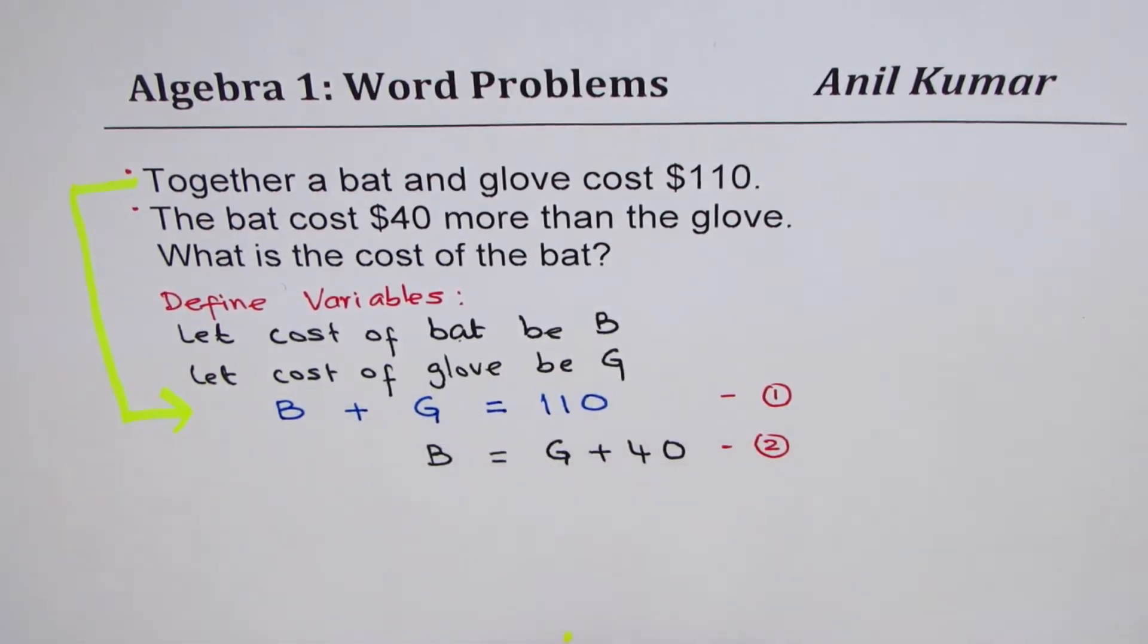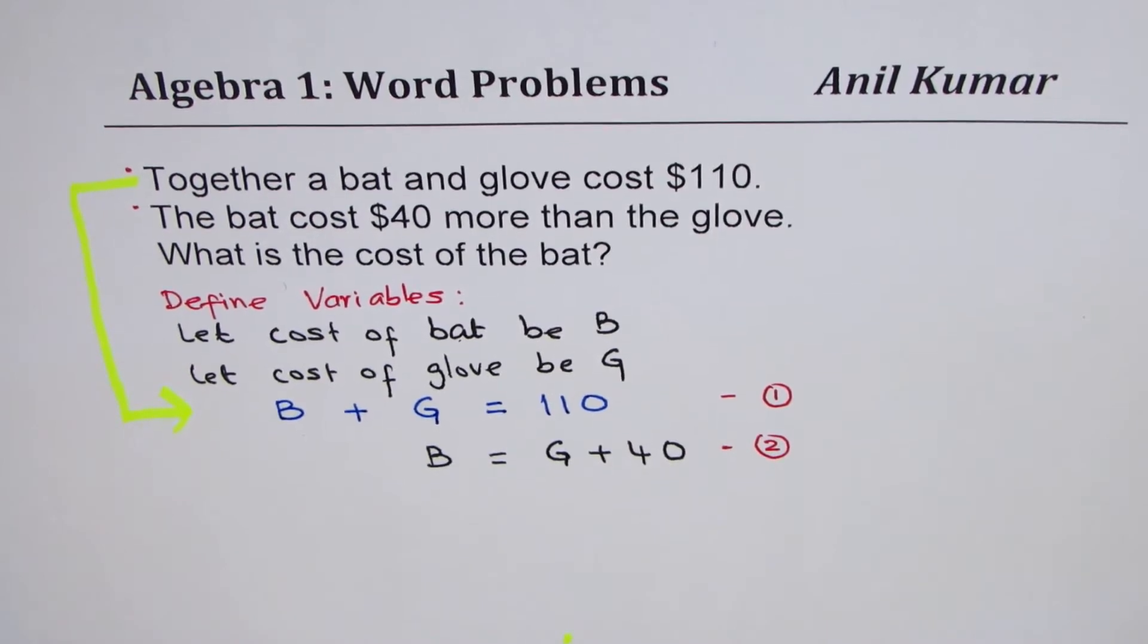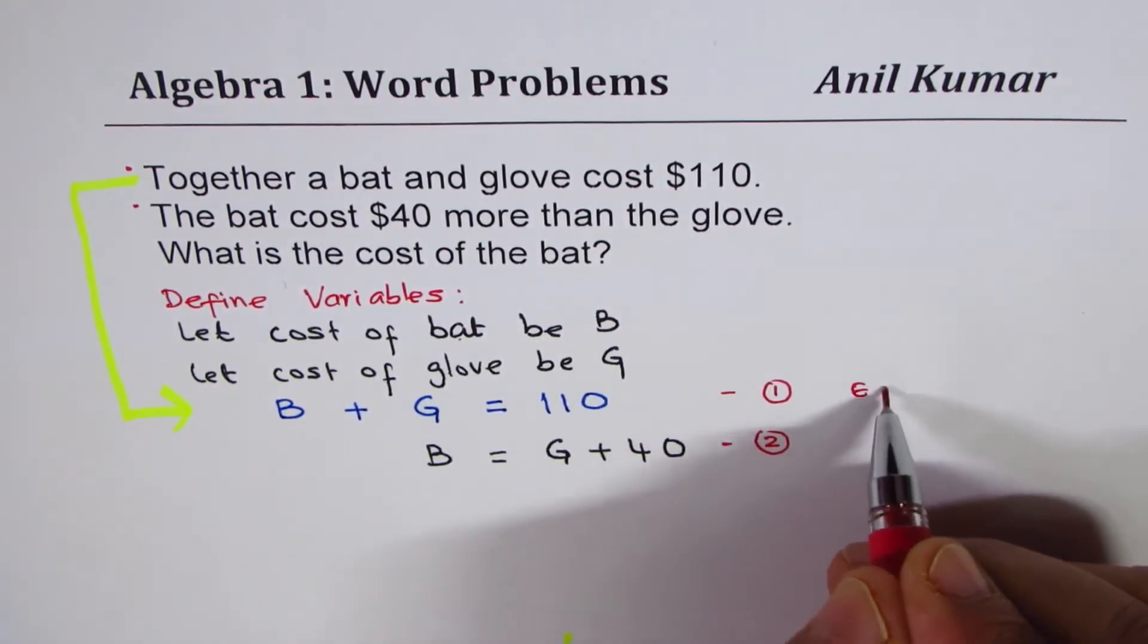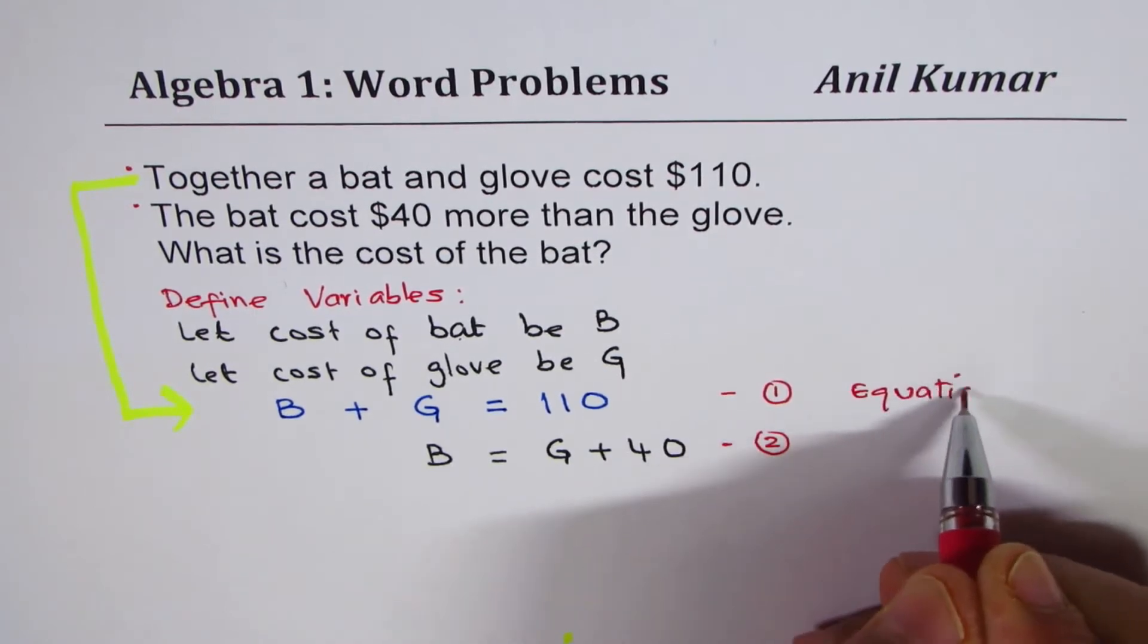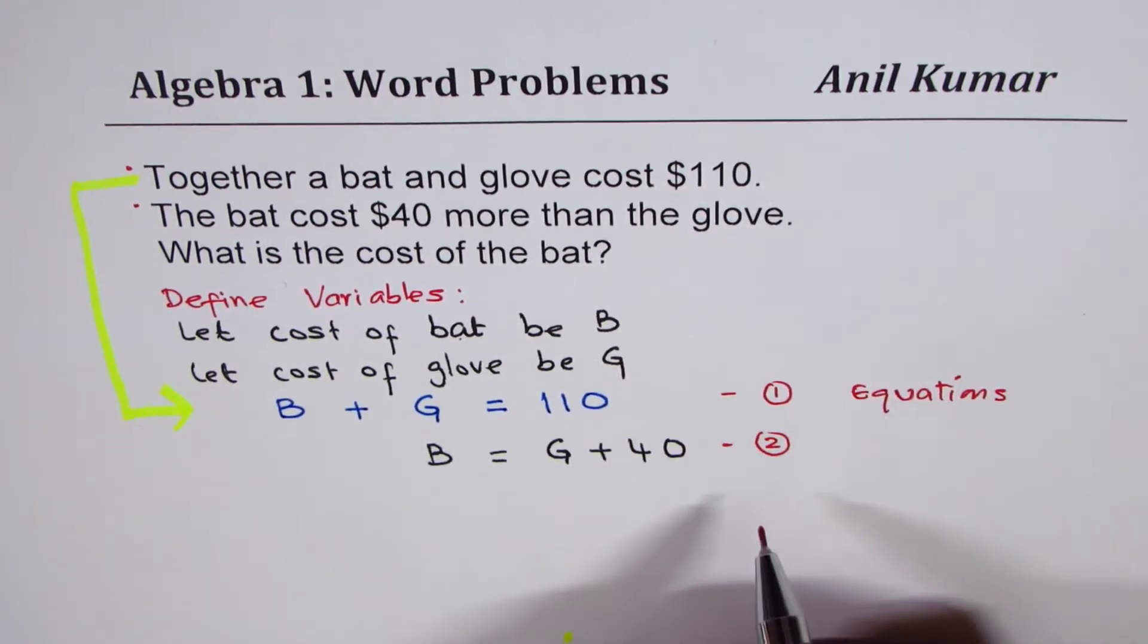Equation means we have an equal to sign. That means equation. So, these are the two equations. We will call them equations one and two.